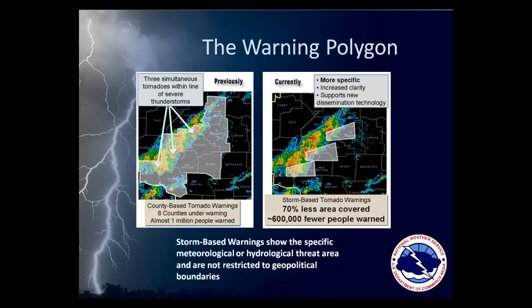When a forecaster issues a warning, he or she issues what is known as a storm-based or polygon warning. In October 2007, the National Weather Service stopped issuing county-based warnings, shown in the picture on the left, in favor of polygon warnings, shown on the right. The advantage of this is to alert only the people affected by the storm versus alerting an entire county population regardless of whether or not the storm would be in their area. These images show the advantage of knowing the specific threat area instead of being restricted by geopolitical boundaries.